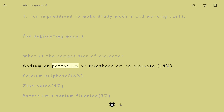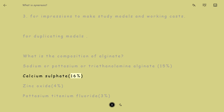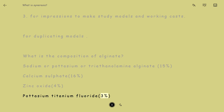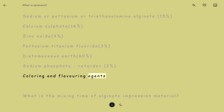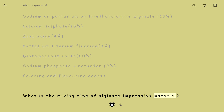What is the composition of Alginate? Sodium, Potassium, or Triethanolamine Alginate – 15%; Calcium Sulfate – 16%; Zinc Oxide – 4%; Potassium Titanium Fluoride – 3%; Diatomaceous Earth – 60%; Sodium Phosphate Retarder – 2%; Coloring and Flavoring Agents.